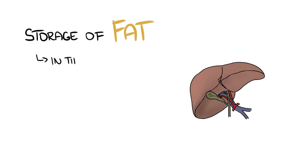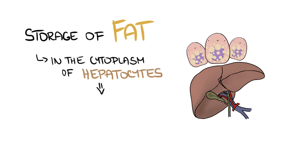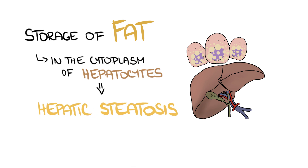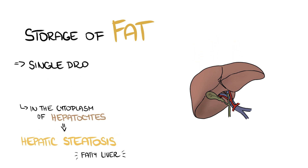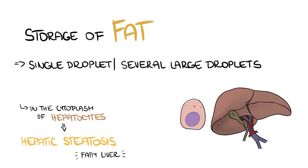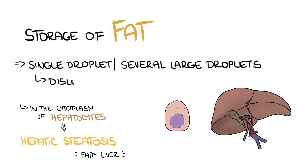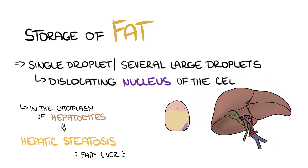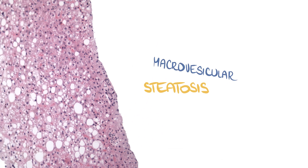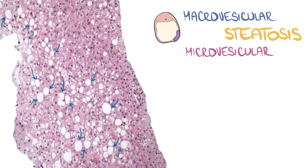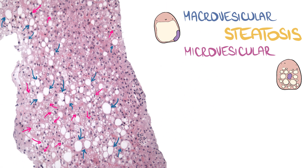Storage of fat in the cytoplasm of hepatocytes is referred to as hepatic steatosis or fatty liver. The fat can be stored as a single droplet or several large droplets dislocating the nucleus of the cell — this kind of steatosis is called macrovesicular. You can see it in the picture together with the microvesicular type, which will be discussed in a minute.